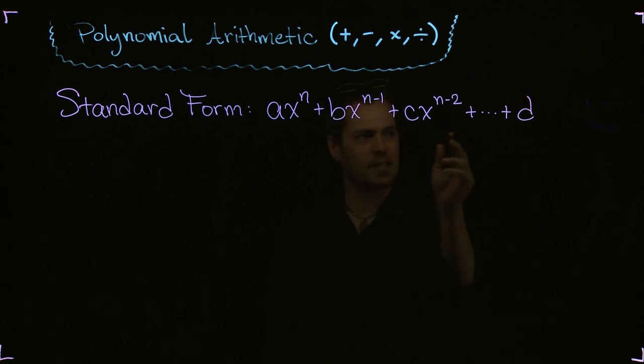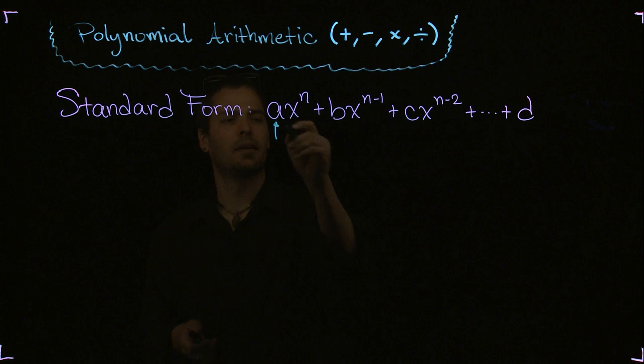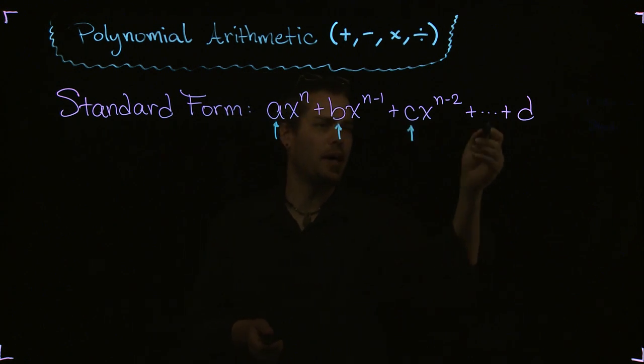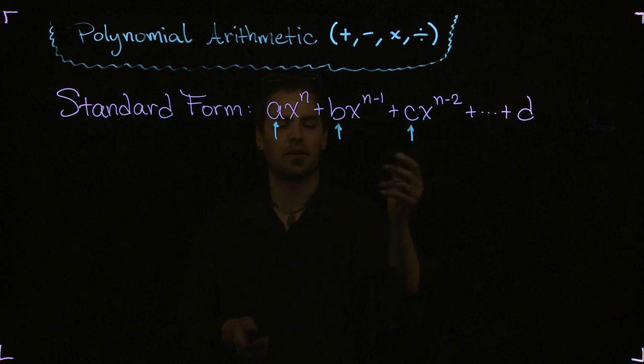The a's, b's, c's, the d—those are just numbers. Those are called coefficients. The numbers in front that are multiplied by our variable terms are called coefficients.